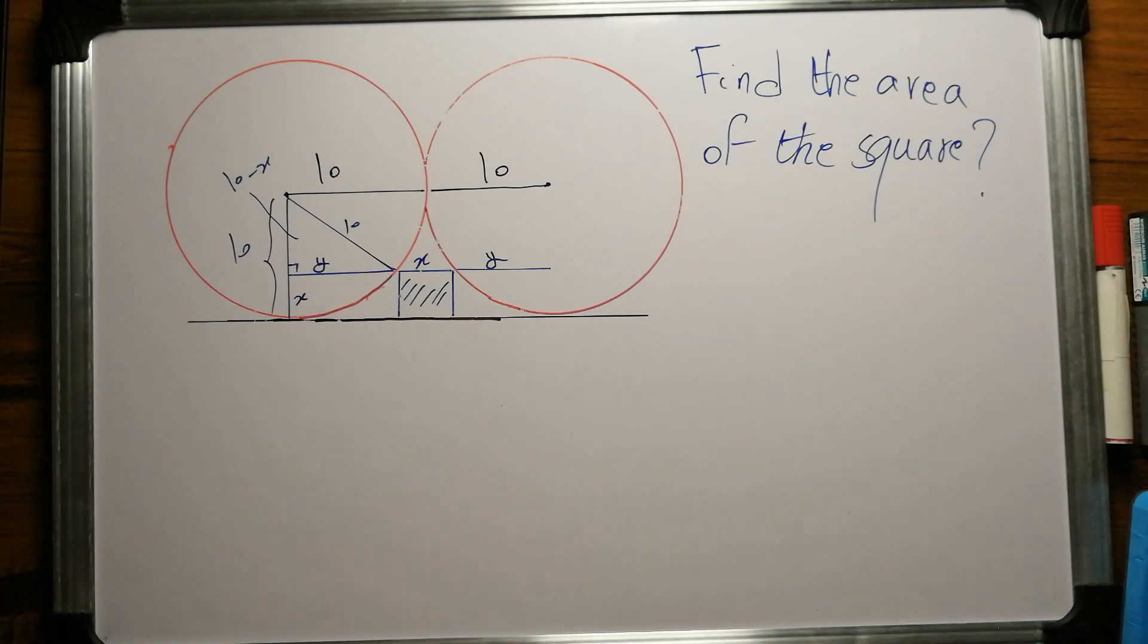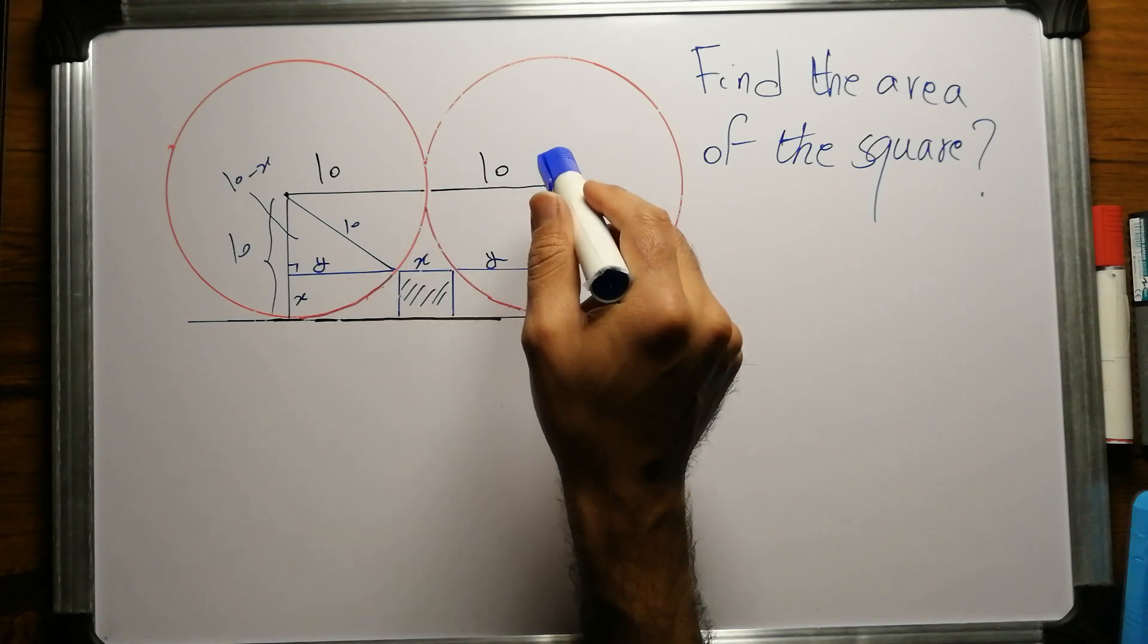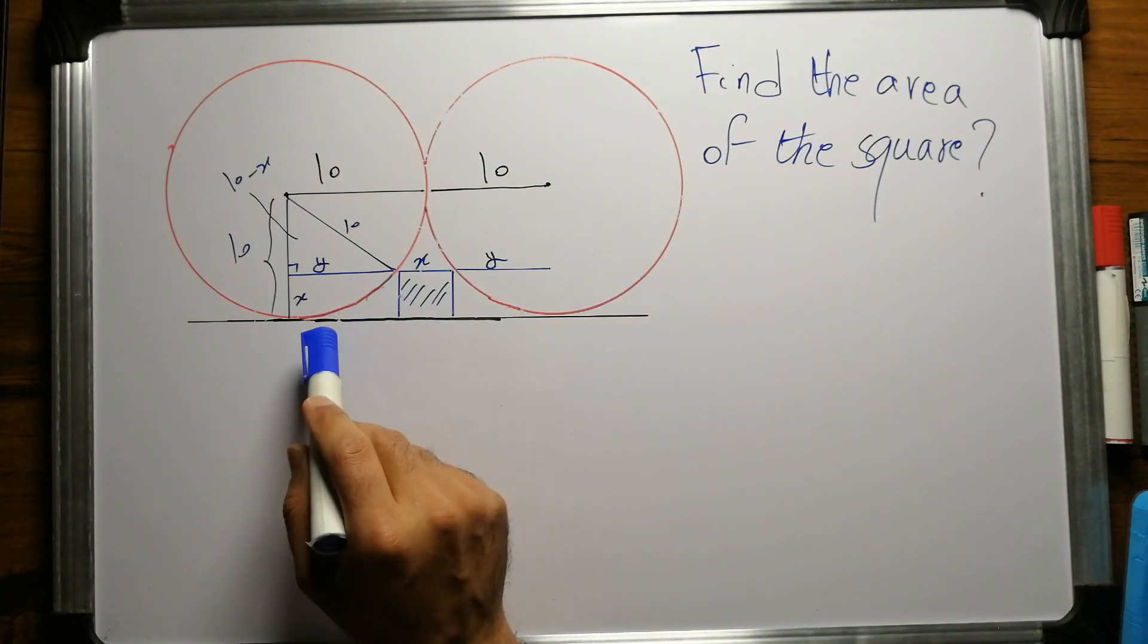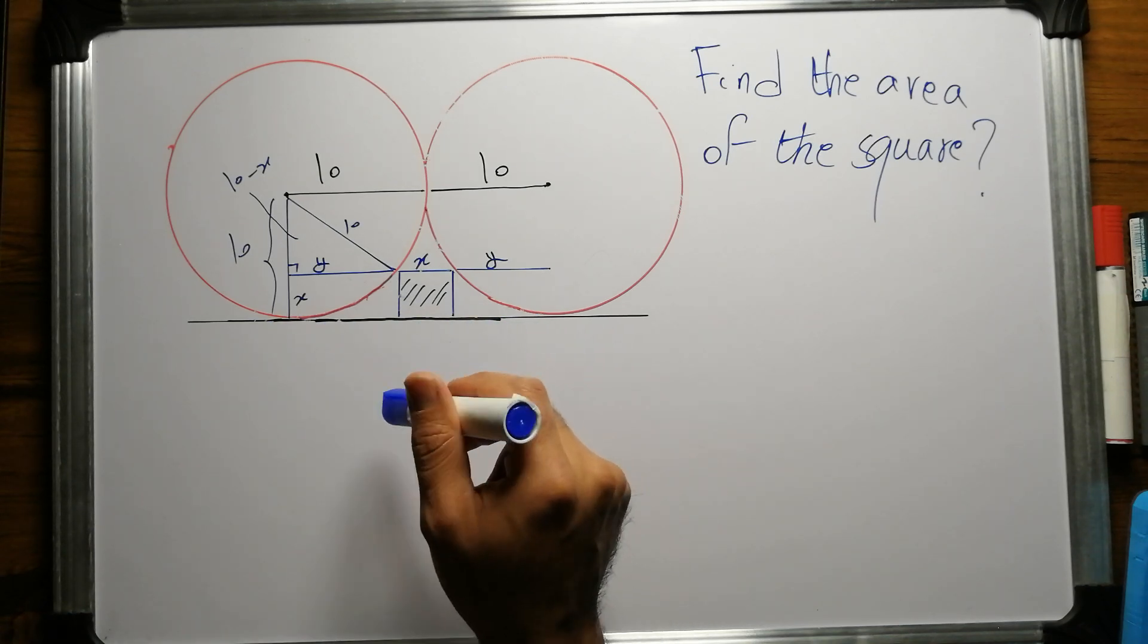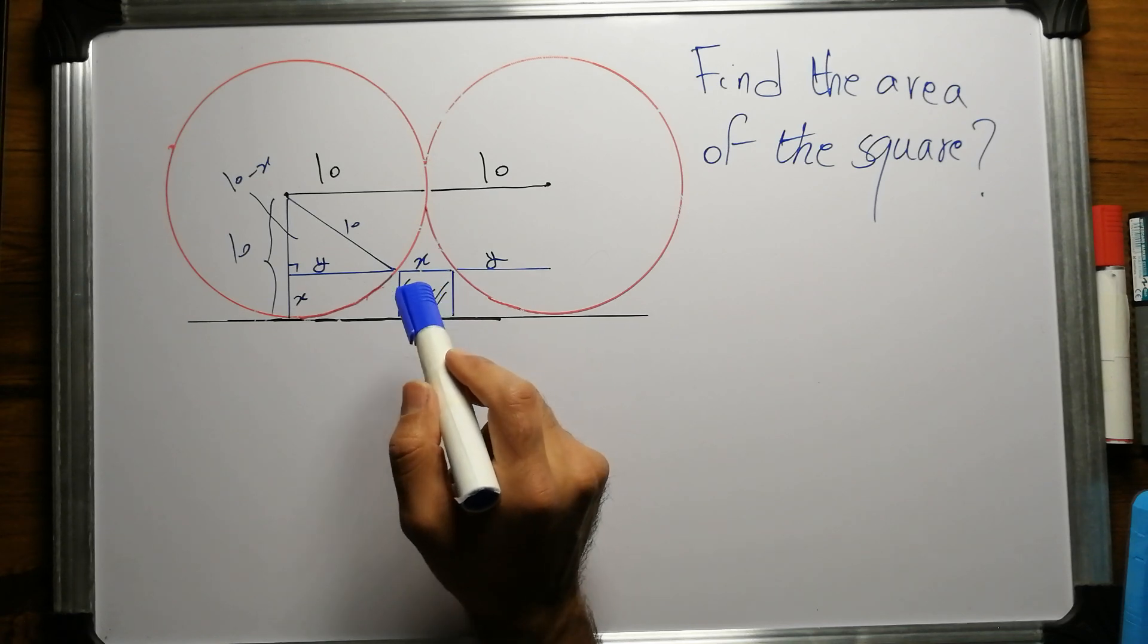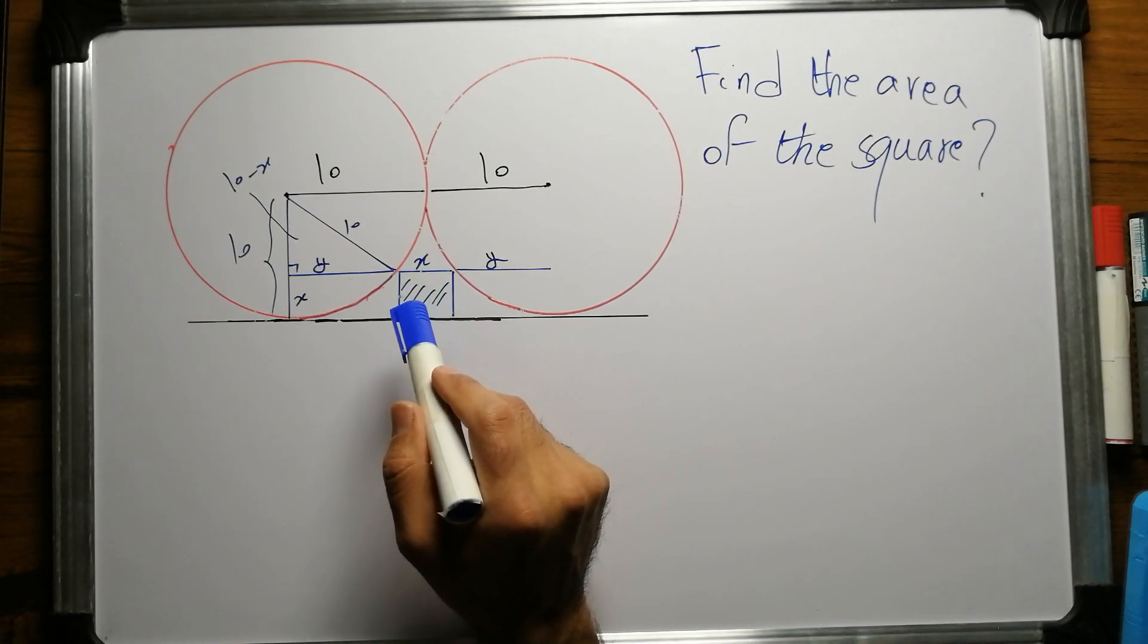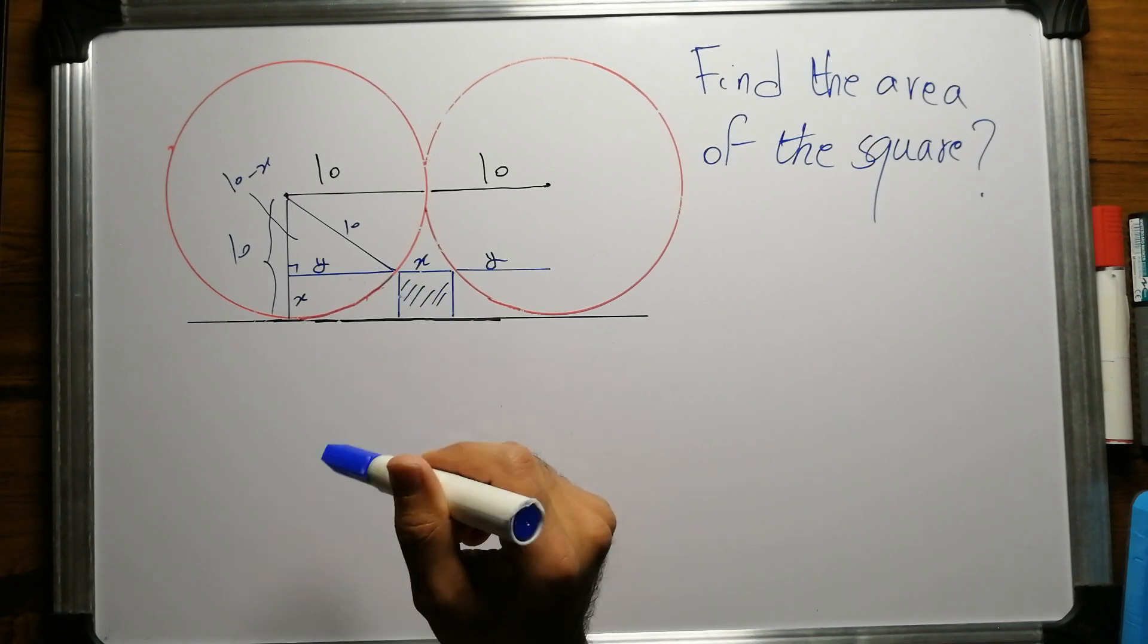We have two circles that are tangent to one another, and there is one tangent line which is tangent to both circles. There is a little square that is trapped and inscribed here. We want to find the area of this square, so obviously we should find one of the sides of the square first.